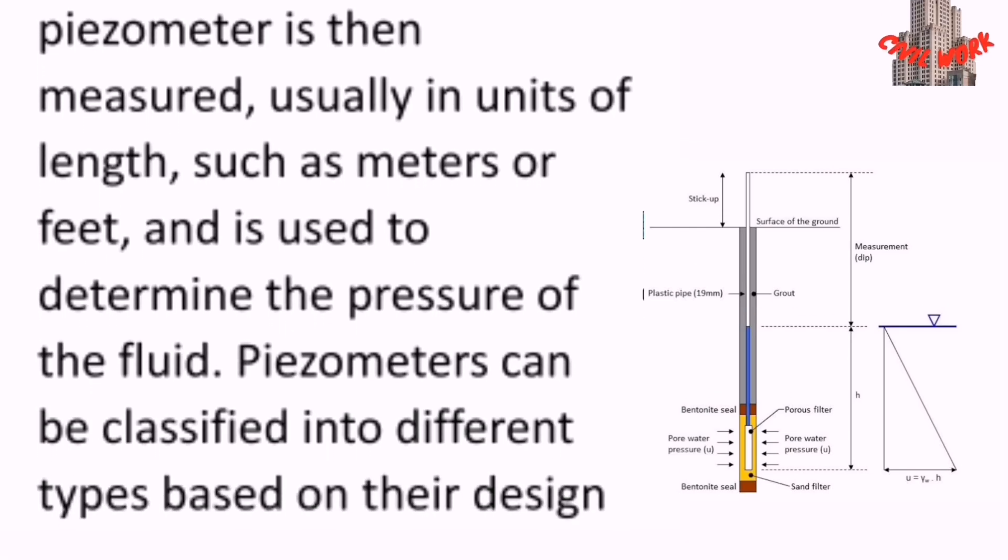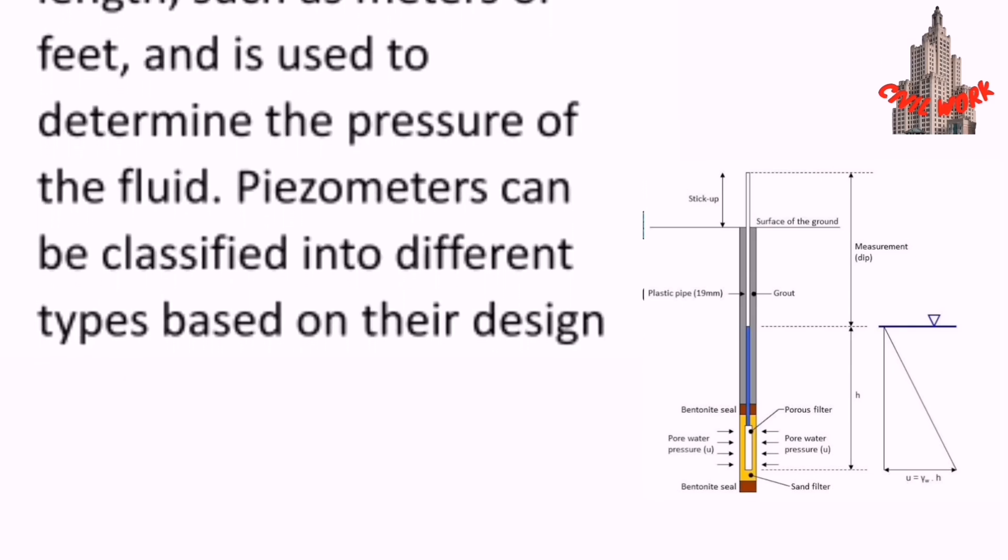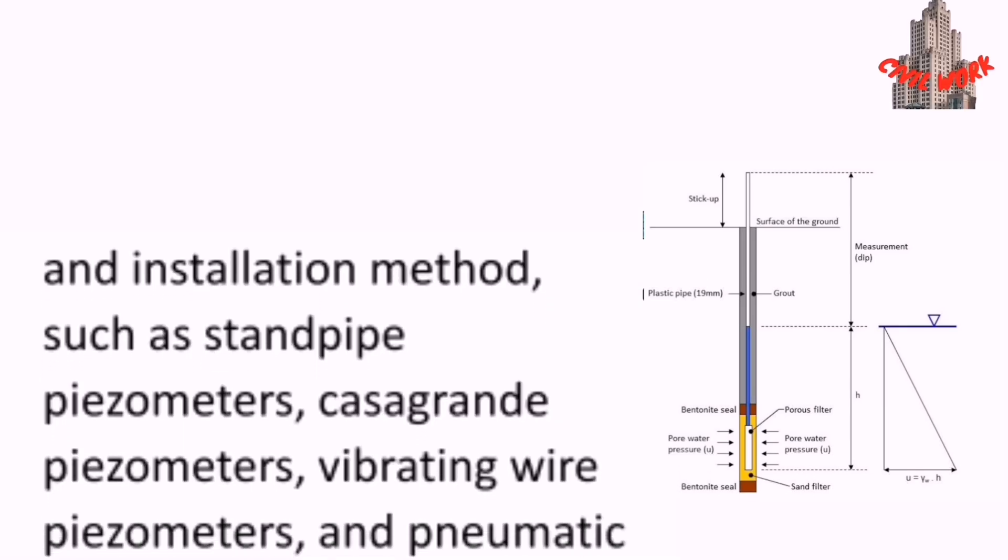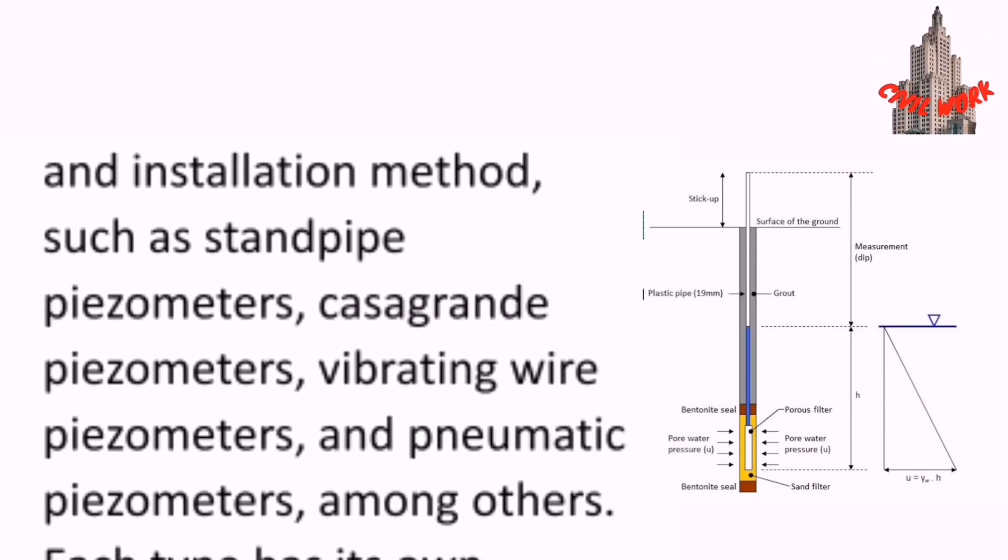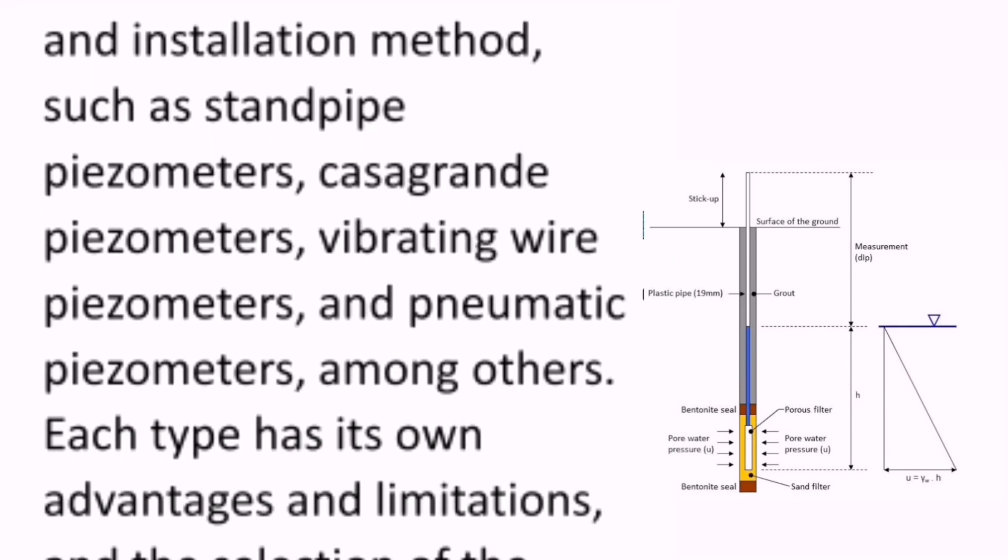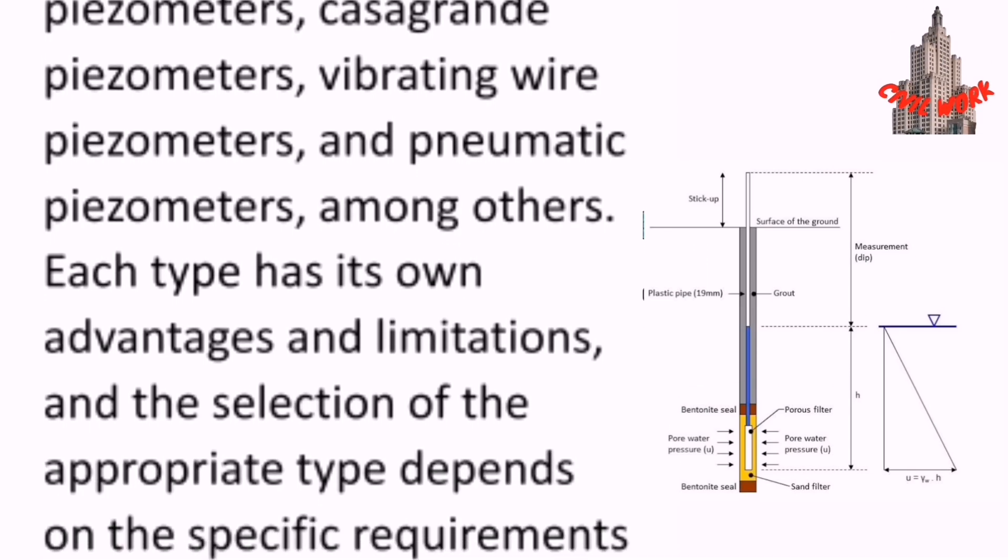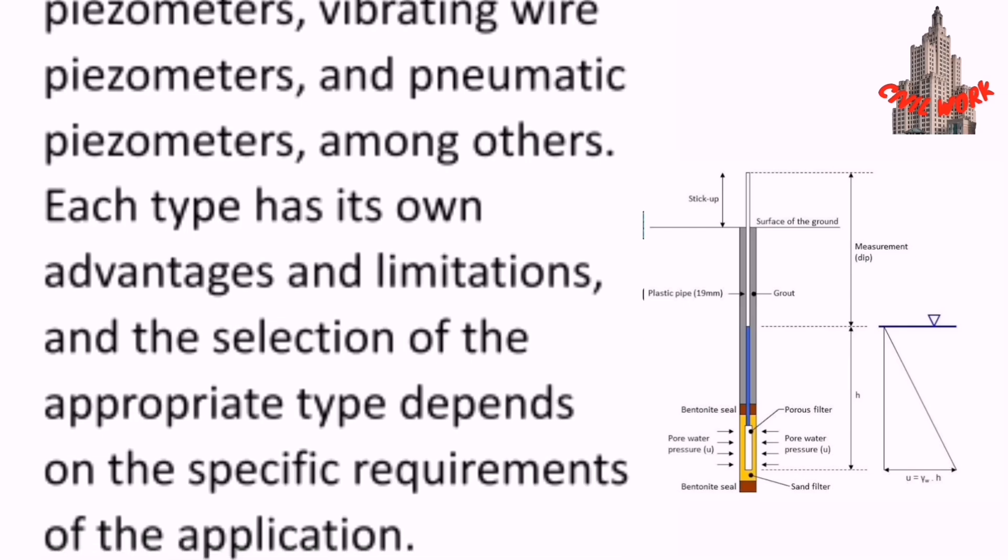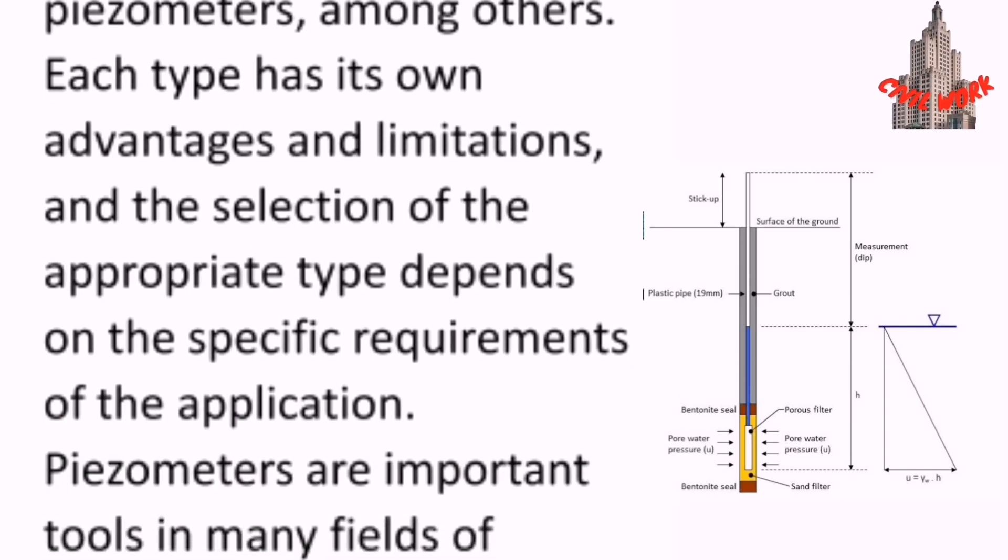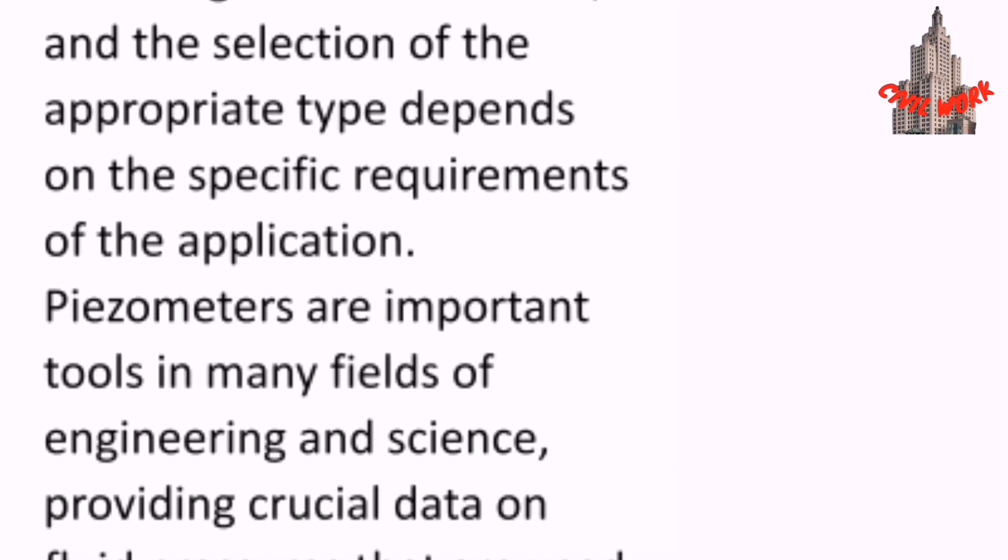The height is used to determine the pressure of the fluid. Piezometers can be classified into different types based on their design and installation methods, such as standpipe piezometers, Casagrande piezometers, vibrating wire piezometers, and pneumatic piezometers, among others. Each type has its own advantages and limitations, and the selection of the appropriate type depends on the specific requirements of the application.